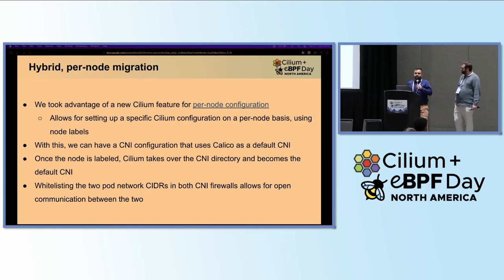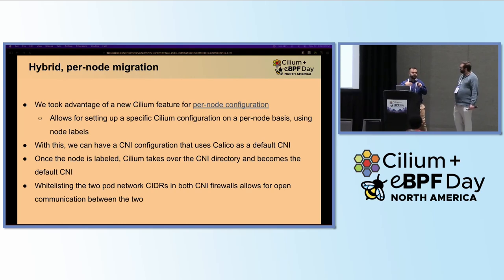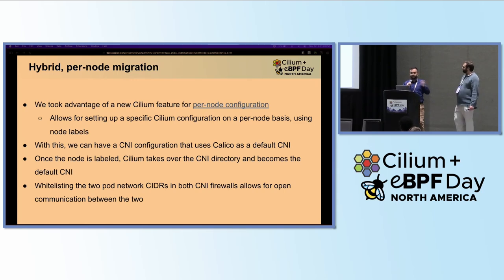This brought us to Cilium version 1.13, which was released as we were actively trying to do this — very convenient timing. This per-node configuration allows you to specify a Cilium configuration on a per-node basis based on node labels. We would be able to use this in our migration to Cilium, and we actually also used it later on when we did kube-proxy replacement. With this, we can use Calico as a default CNI, and once the node is labeled, we would restart Cilium agents to take over that instance. One important thing is to whitelist pod network CIDRs for both Calico and Cilium in each other's firewall rules to allow communication between pods.